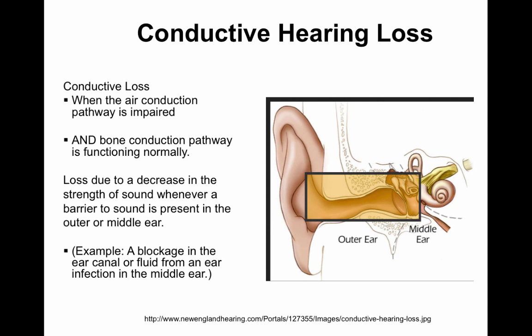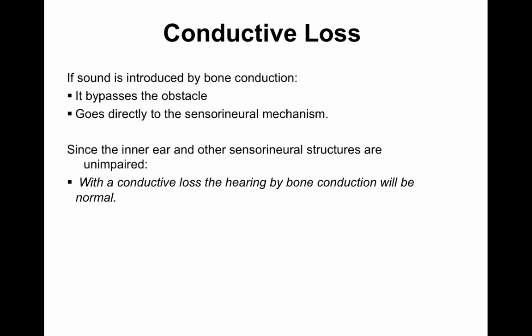For example, a blockage in the ear canal or fluid in the middle ear. Conductive hearing loss occurs in the outer ear or the middle ear. When sound is put in through bone conduction, it bypasses the obstacle, it goes directly to the sensorineural mechanism, and the bone conduction scores are normal because testing by bone conduction bypasses the outer ear or the middle ear.